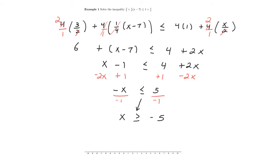So here's our answer. x is greater than or equal to negative 5. If I want to draw this on the number line that is given below, I'm going to put a closed circle at negative 5. That's right there.